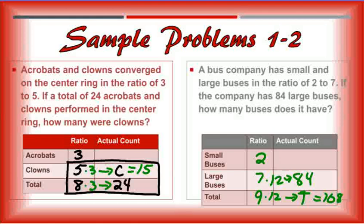If you didn't want to do it that method, you could have done cross products. So it would have been 7 times T equals 84 times 9, and then solve for T. Sometimes the other method is a little bit quicker and easier to do.